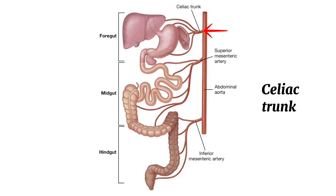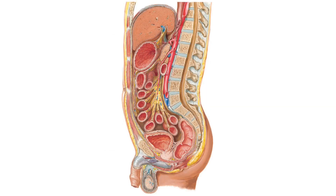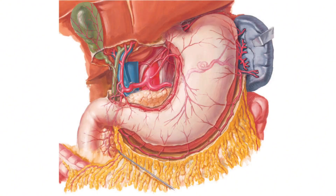The celiac trunk is the first anterior branch of the abdominal aorta, supplies the foregut, so it is called the artery of the foregut. It arises from the abdominal aorta immediately below the aortic hiatus of the diaphragm, anterior to the T12 vertebra. It terminates immediately by dividing into its three terminal branches: left gastric artery, splenic artery, and common hepatic artery.